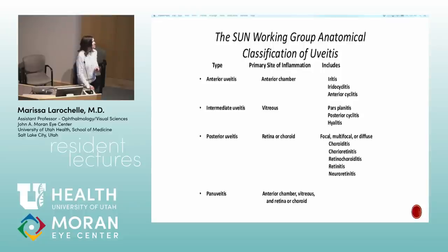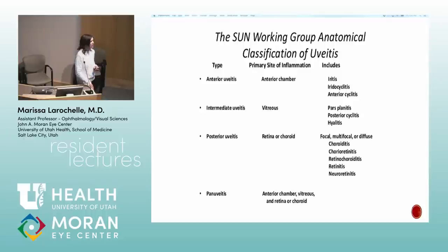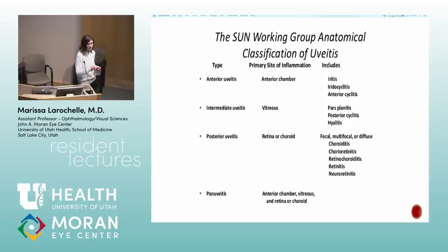Intermediate uveitis can have vitreous cells, a few anterior cells, optic nerve swelling, and macular edema — and even though those are findings in the posterior pole, it does not count as posterior uveitis. The most misused term is calling intermediate uveitis with CME and optic nerve edema a pan uveitis. Posterior uveitis requires a focal inflammatory lesion in the choroid or retina, and pan uveitis is when you have that in addition to anterior and intermediate uveitis.